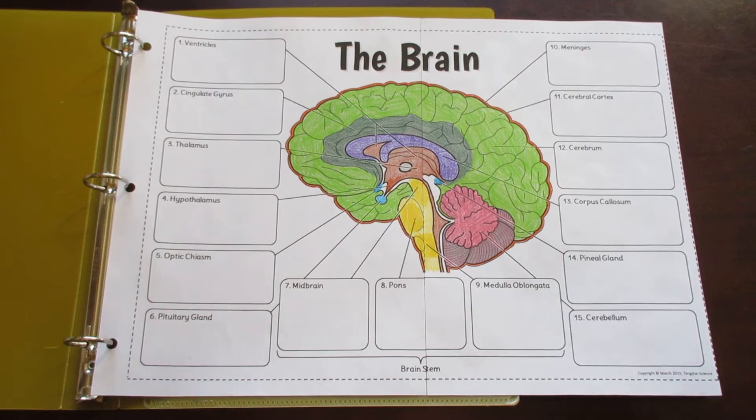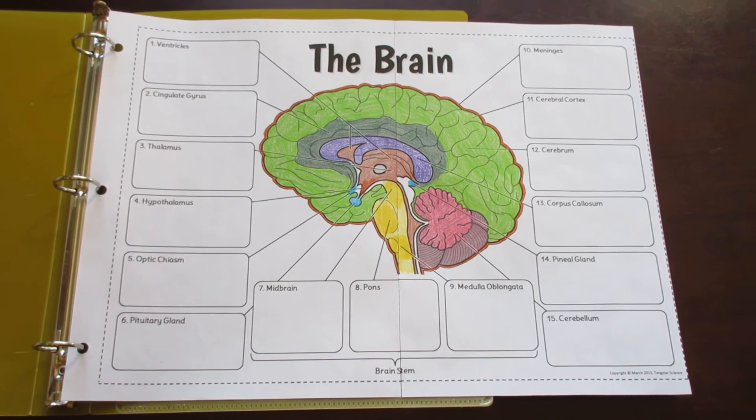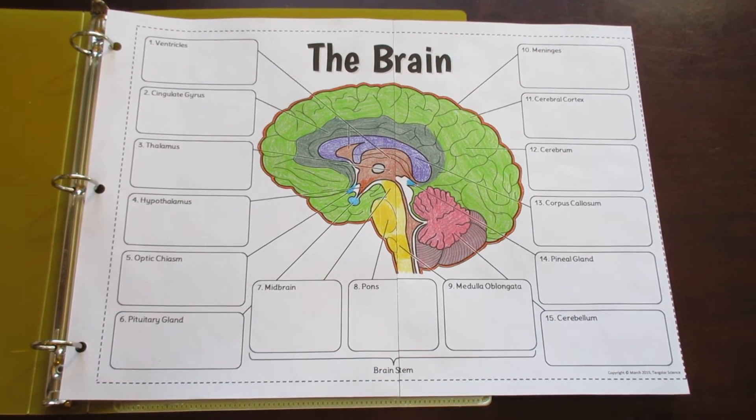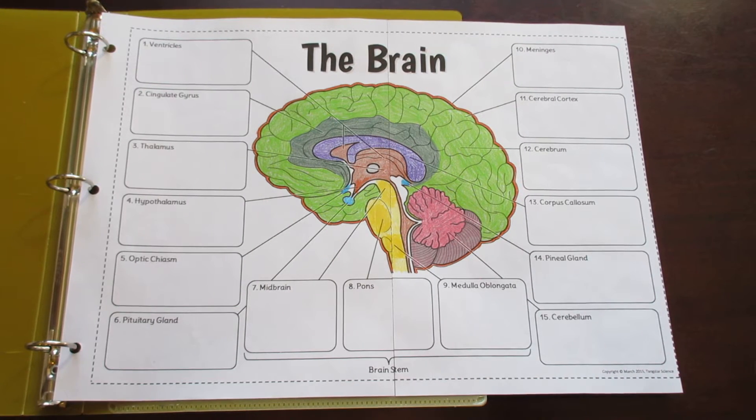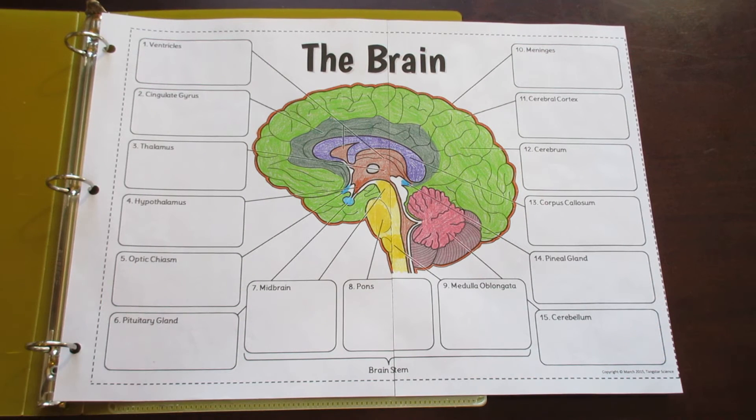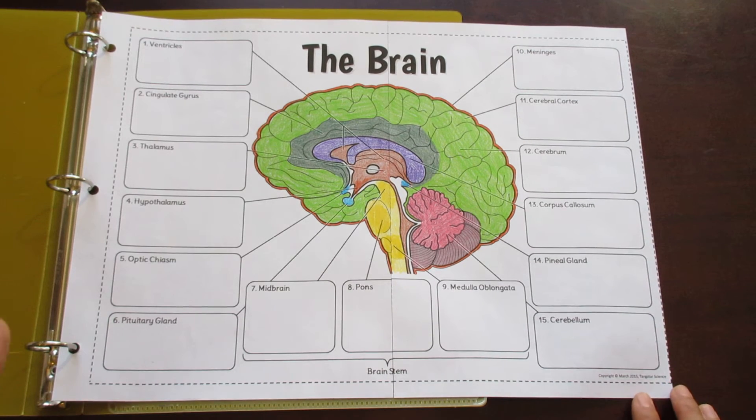Now let's take a closer look at the features of this. First of all, each of the foldables contains a diagram in the center of the brain. It's nice and big for students to color to help aid in understanding of the different parts.